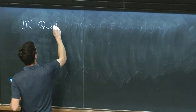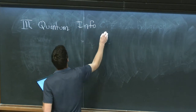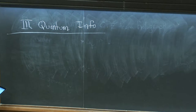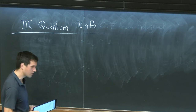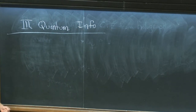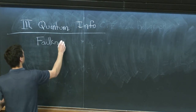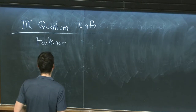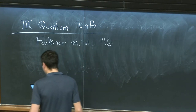I promised three perspectives on these energy conditions. The last one is quantum information. This is really one of the key reasons for being interested in these energy conditions recently — they connect the kinds of things we've been talking about with quantum information and the connection between gravity and entanglement. I'm going to describe the result of Faulkner, Lee, Parkar, and Wong from a couple years ago.